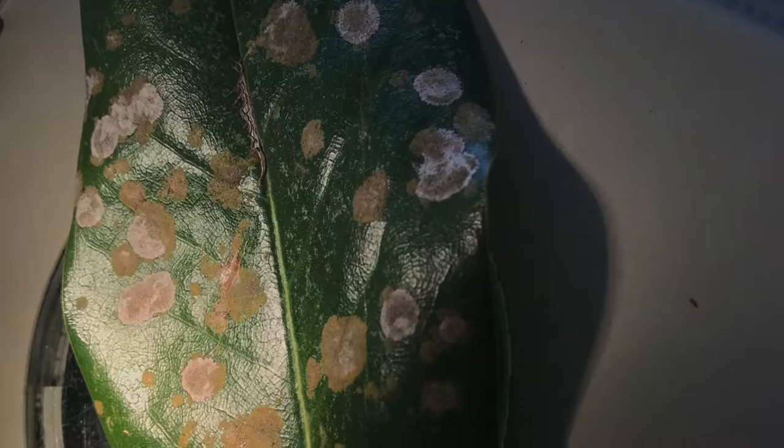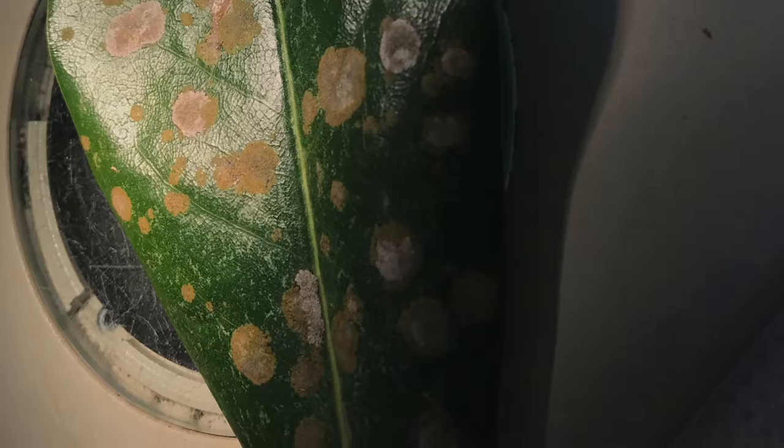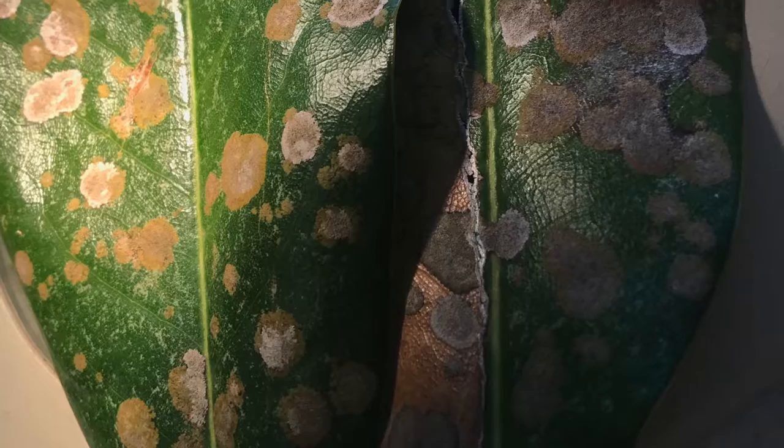The symptoms of algal leaf spot include spots that are circular and blotchy and usually raised from the leaf surface. The spots affect not only the leaves but can also affect the twig, branches, and fruits. The edges of the spots may be wavy or feathered. The color varies from crusty gray-green to greenish-brown. And if the colonies are numerous, premature yellowing and loss of leaves can occur.